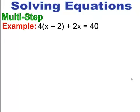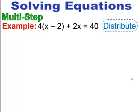In this next example, notice we have the distributive property and multiple of the same variable. You always want to remove the parentheses first — you cannot combine like terms until you've completed the distributive property. Distribute the 4 to everything inside: 4 times x is 4x, 4 times minus 2 is minus 8, then bring down the plus 2x equals 40. Always double-check that you distributed properly, because if you forget to multiply that 4 to the 2, you'll end up with an incorrect answer.